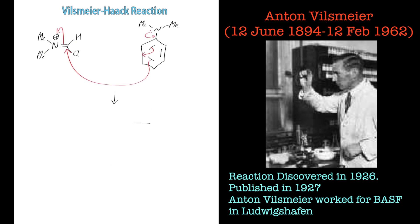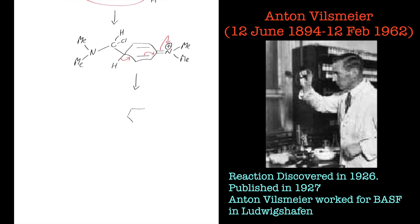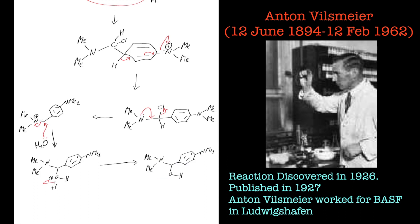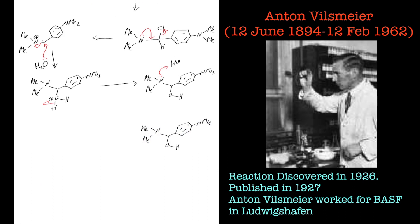The Vilsmeier intermediate is then attacked by an electron-rich aromatic compound — it has to be electron-rich otherwise the reaction won't proceed. It's attacked at the carbon and then quickly fragments; the aromatic compound re-aromatises, kicking out chloride ion to give an iminium intermediate. That can easily break down in the presence of water to give an aldehyde, as the aminol leaves as dimethylamine.